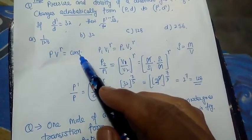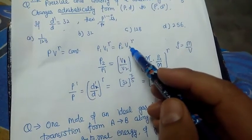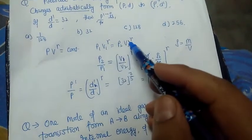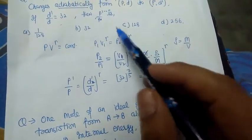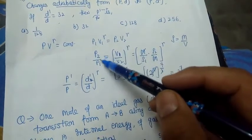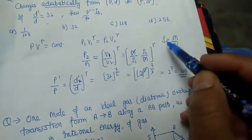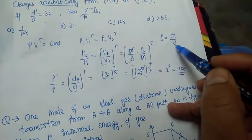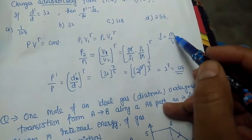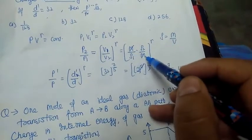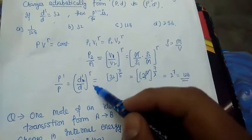For an adiabatic process, PV^γ = constant, so P₁V₁^γ = P₂V₂^γ. Therefore P₂/P₁ = (V₁/V₂)^γ. Since density = mass/volume, volume is inversely proportional to density. Substituting, the ratio P'/P is expressed in terms of the density ratio.